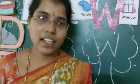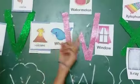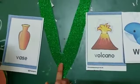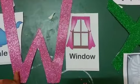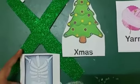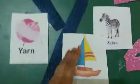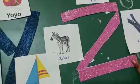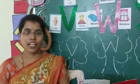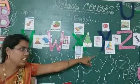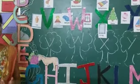So children, today how many letters did we learn? We learned five letters — capital V, capital W, capital X, capital Y, capital Z. What is the sound of V? V sound is V. What is the sound of W? W sound is W. X sound is X. What is the sound of Y? Y sound is Y. What is the sound of Z? Z sound is Z. Good. So now we all know the alphabet from A to Z — 26 letters — and we know all their sounds.